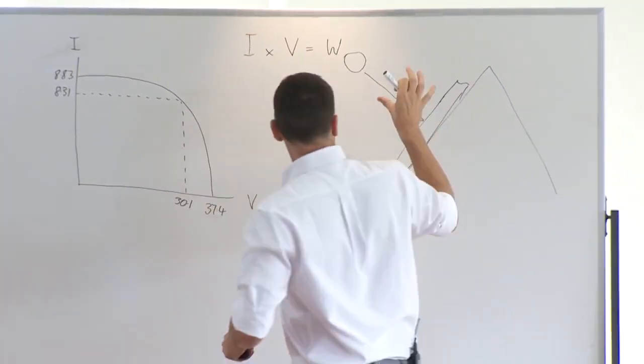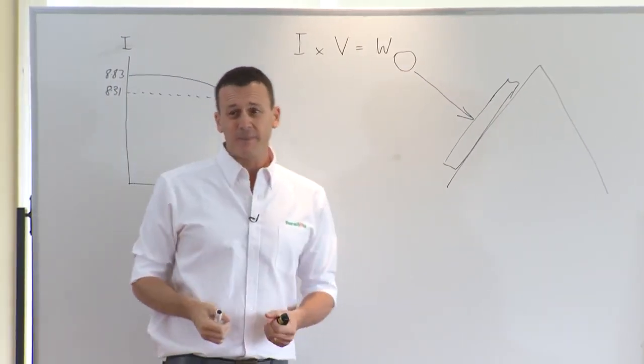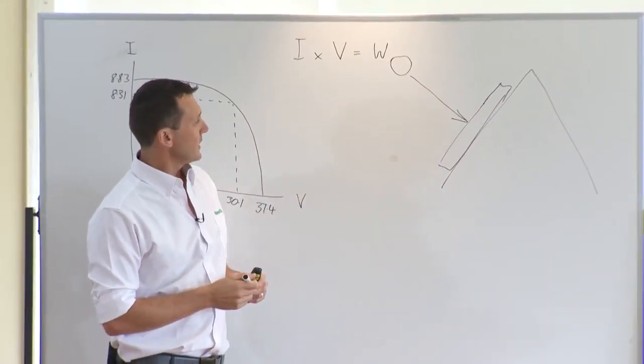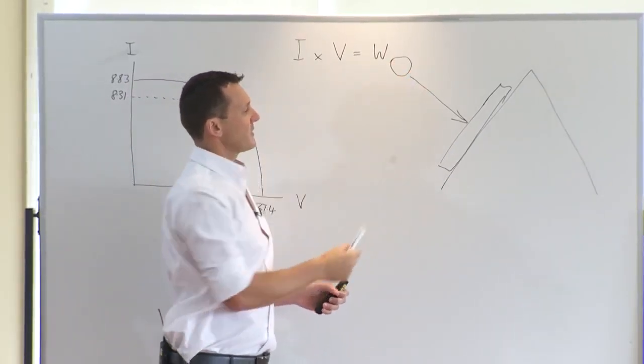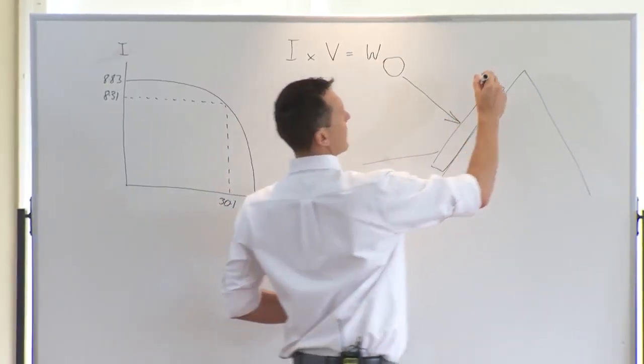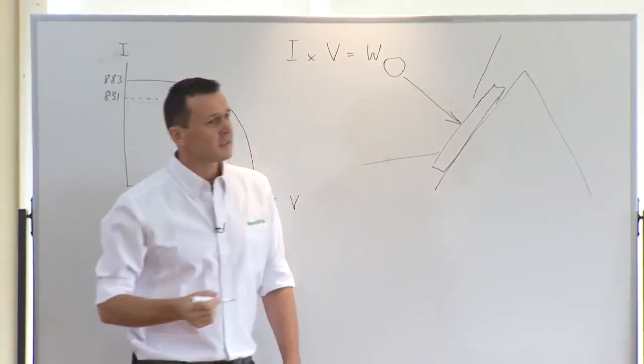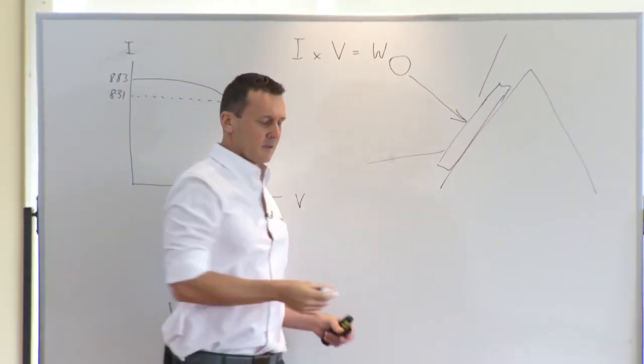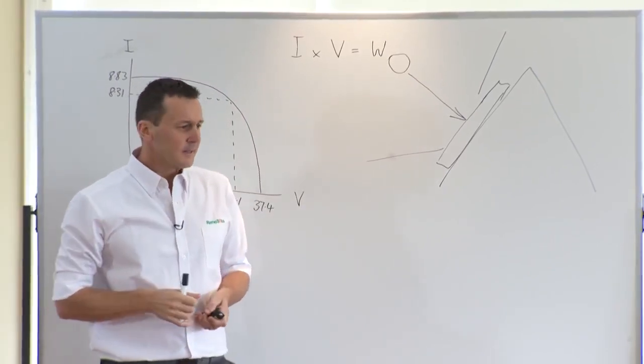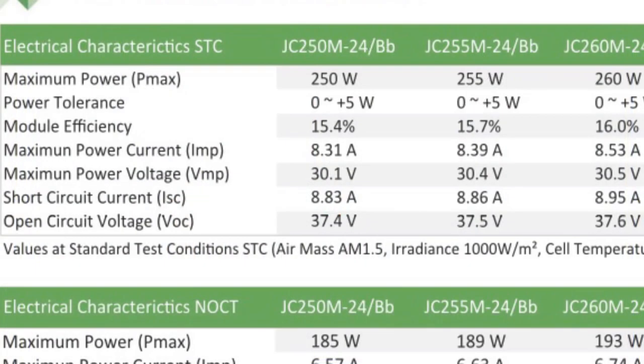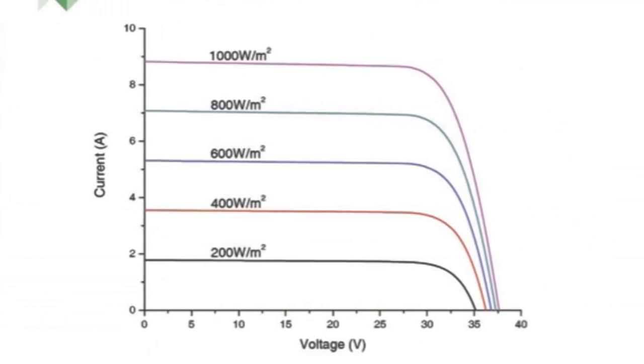But of course, as we all know, the sun doesn't sit at that position perpendicular to our panels all day. What we would normally see is the sun varying across the day, potentially being at low angles here to higher angles or higher positions, but giving us a lower angle relative to the module. And on that data sheet, you'll see a curve for the different irradiance figures. The lowest one being at 200 watts per square metre, and leading up to that 1000 watts per square metre, which is your most ideal position here at 90 degrees.